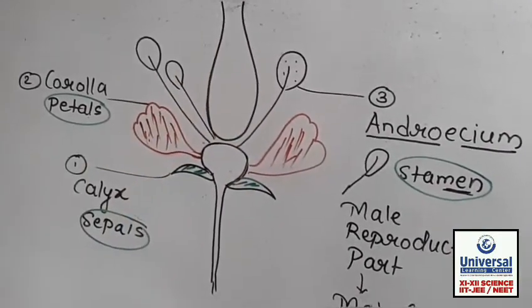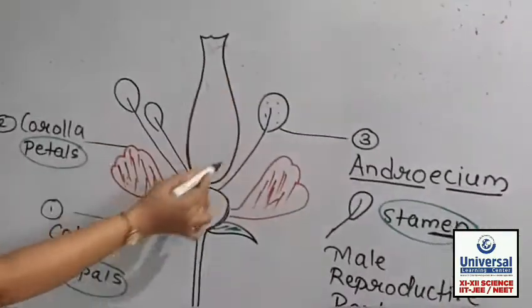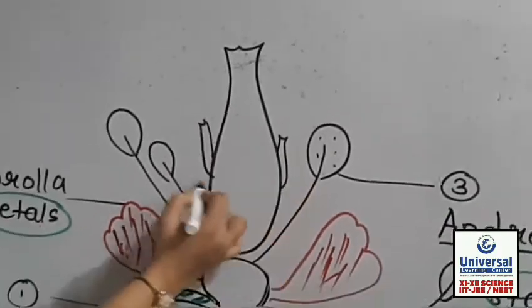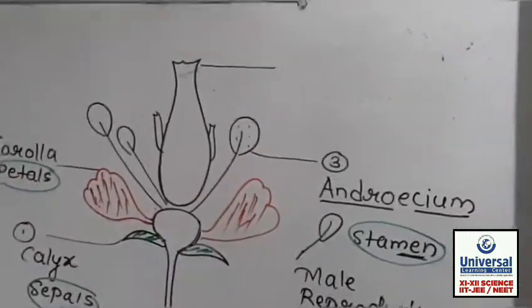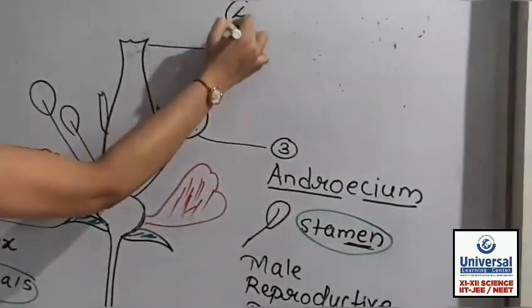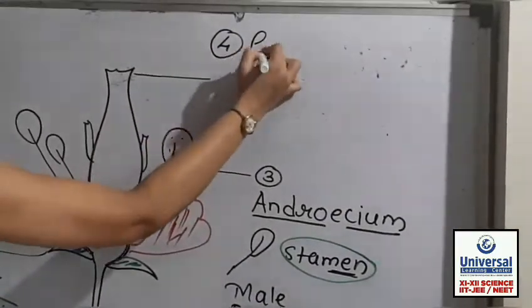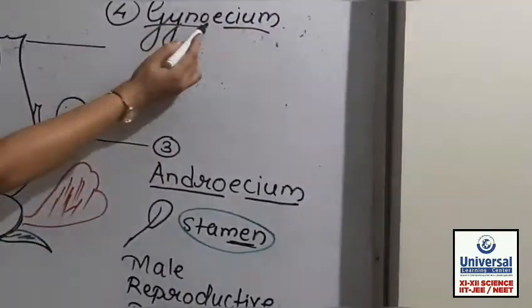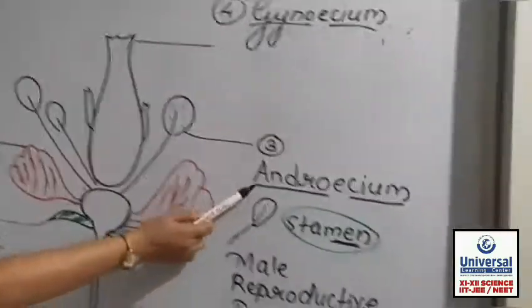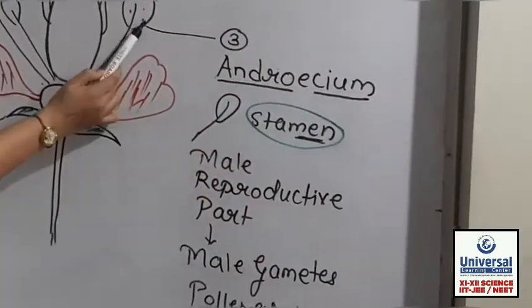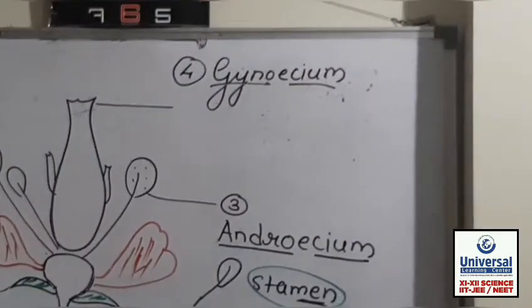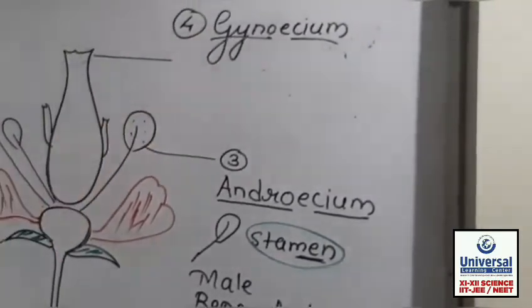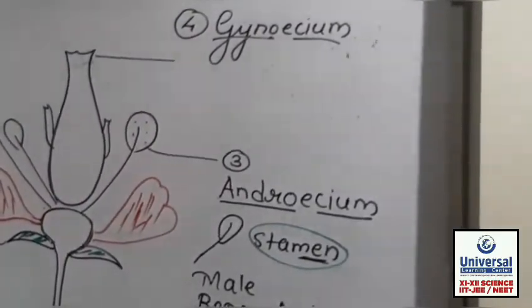I am drawing it as one structure, but you should consider it as many. This fourth layer is called gynoecium. Just as androecium is the male reproductive part of the flower, the prefix 'gyno' means woman or female — so gynoecium is the female reproductive part of the flower.